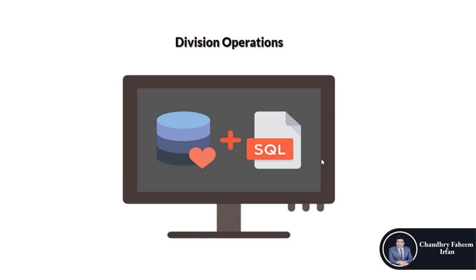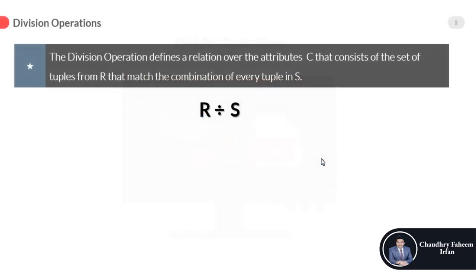Welcome to this lecture. In this lecture we are going to learn about division operations. The division operation defines a relation over the attributes C that consists of the set of tuples from R that match the combination of every tuple in S.